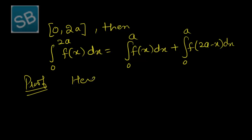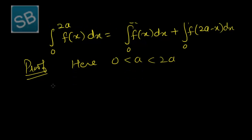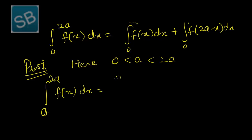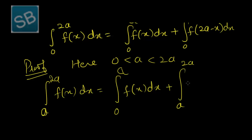Here, since 0 < a < 2a, we partition the closed interval into two parts: 0 to a and a to 2a. So by the additive rule, the integral from 0 to 2a of f(x) dx equals the integral from 0 to a of f(x) dx plus the integral from a to 2a of f(x) dx.